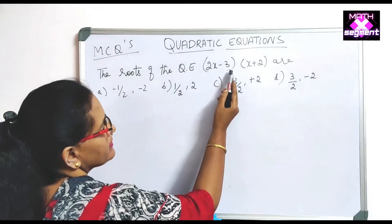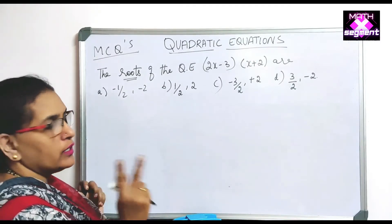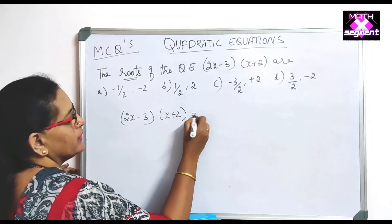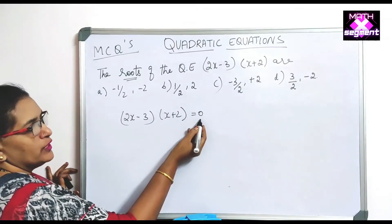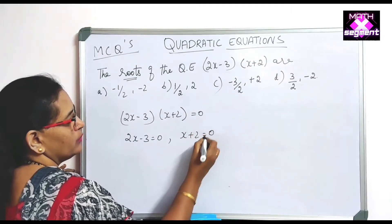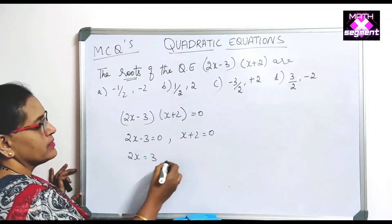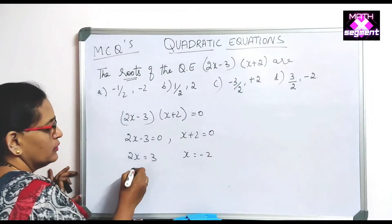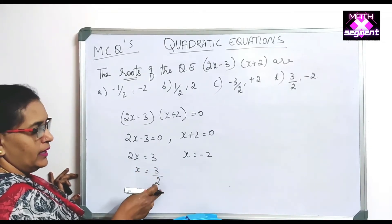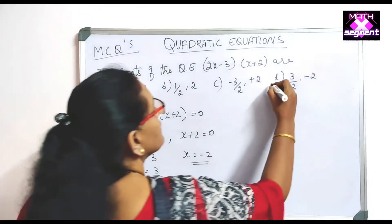MCQ: Find the roots of (2x − 3)(x + 2) = 0. Setting each factor to zero: 2x − 3 = 0 gives x = 3/2, and x + 2 = 0 gives x = −2. So the two roots are 3/2 and −2. The correct option is D: +3/2 and −2.